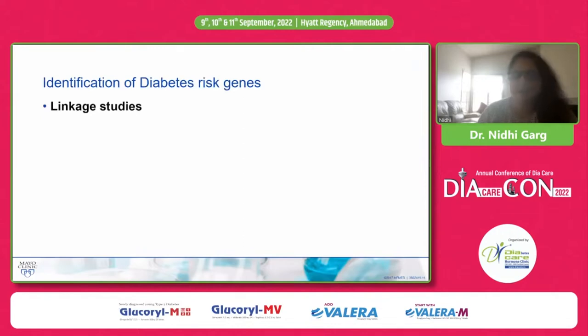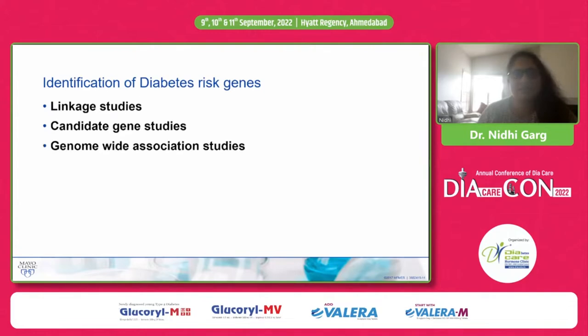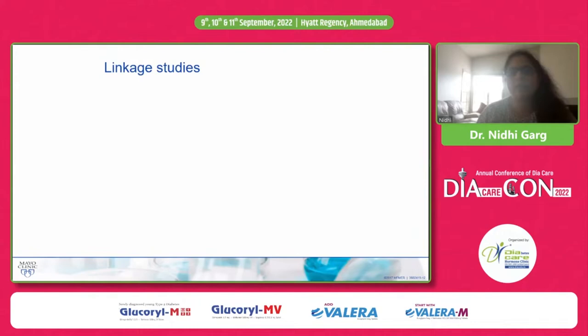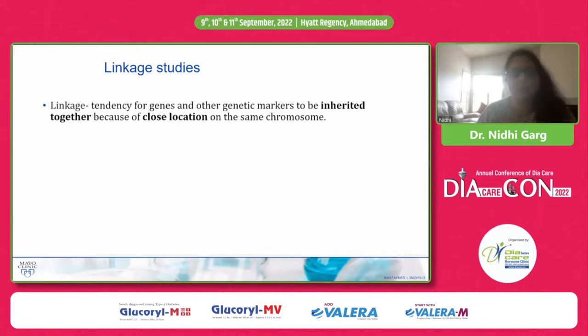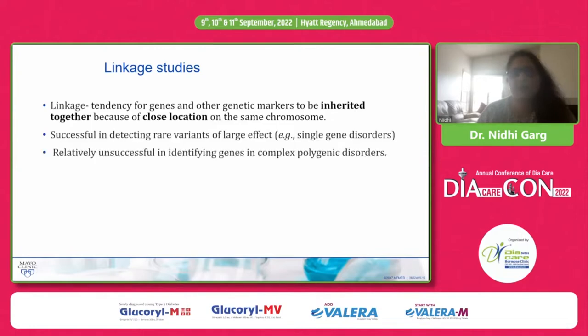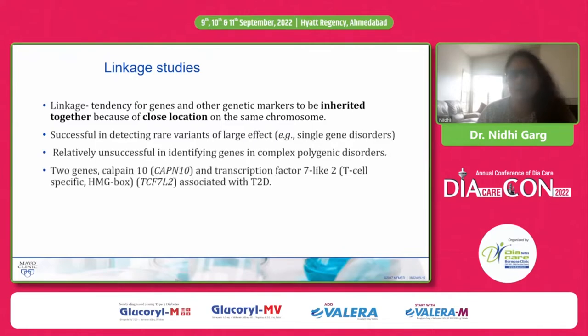There are three main types of studies to identify diabetic genes: linkage studies, candidate gene studies, and genome-wide association studies. In linkage studies, two genes so close to each other on a chromosome tend to be inherited together — they are linked. Linkage studies are successful in detecting rare variants of large effect like single-gene disorders, but are not very successful in identifying genes in complex polygenic disorders. However, in type 2 diabetes, two genes — calpain 10 and TCF7L2 — have been found by linkage analysis.